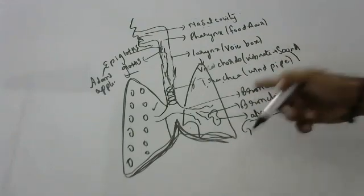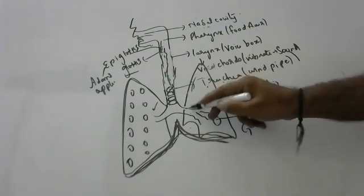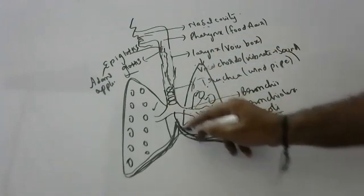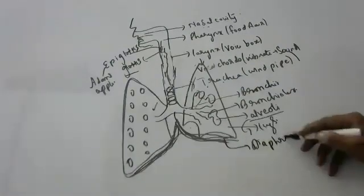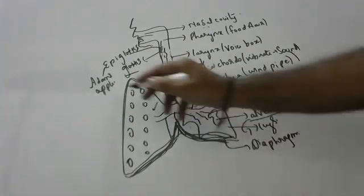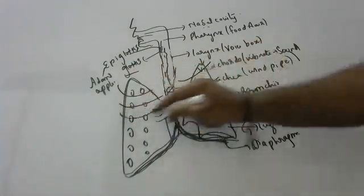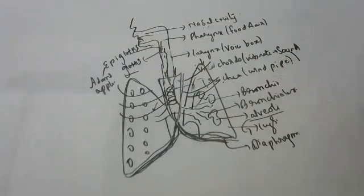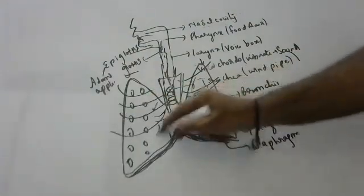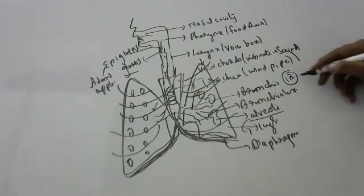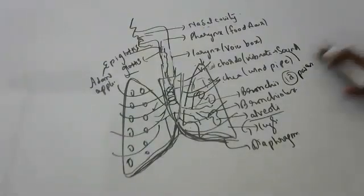The lungs are resting on the diaphragm. The diaphragm is the muscular organ that divides the chest and abdomen. Because lungs are very sensitive structures, they are protected by ribs in the front, by the breast bone called the sternum in the center, and by the vertebral column at the back. There are 12 pairs of ribs.